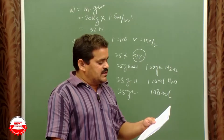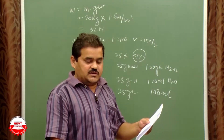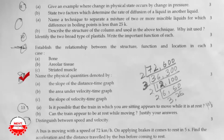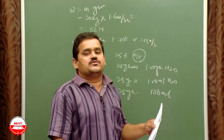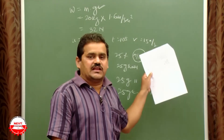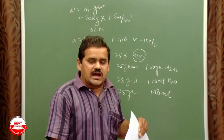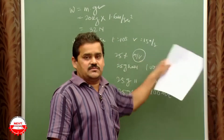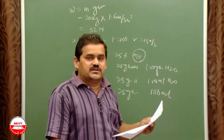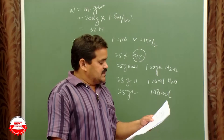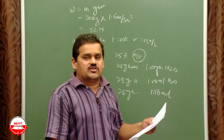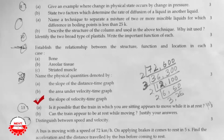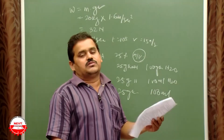Question number twelve: Name the physical quantity denoted by the slope of the distance-time graph. Slope = y/x = distance/time, which is speed. Second, the area under the velocity-time graph = velocity × time = displacement. Third, the slope of the velocity-time graph = velocity/time = change in velocity/time = acceleration.